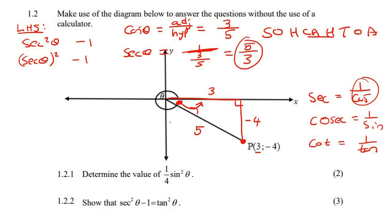So we know that sec theta is 5 over 3, so we can say 5 over 3 squared minus 1. And so that's going to give us 25 over 9 minus 1. Get a common denominator, so that'll be 25 over 9 minus 9 over 9. And that should give us 16 over 9.